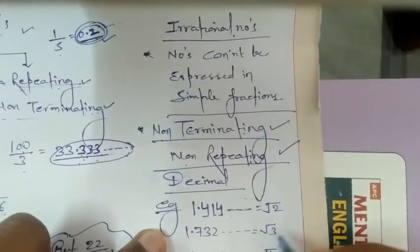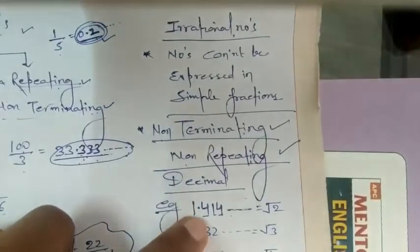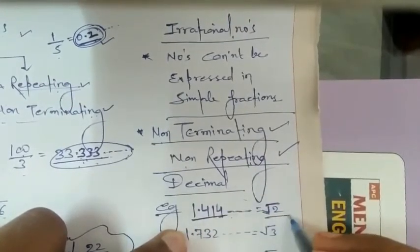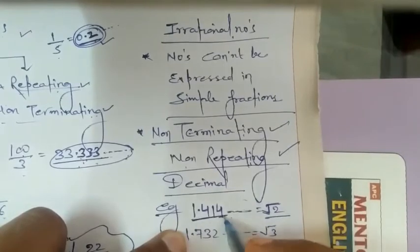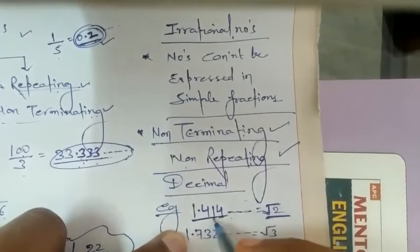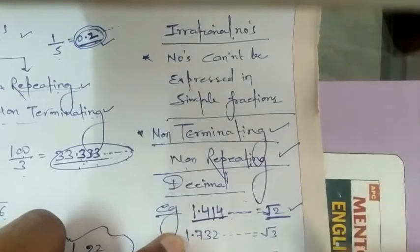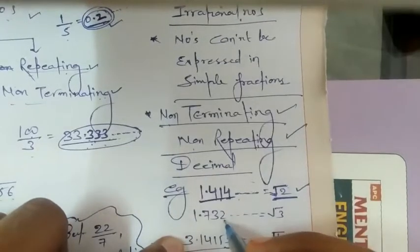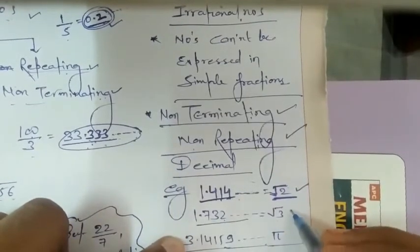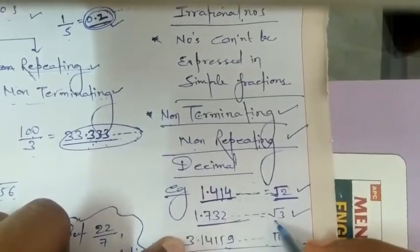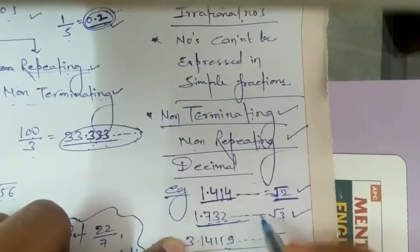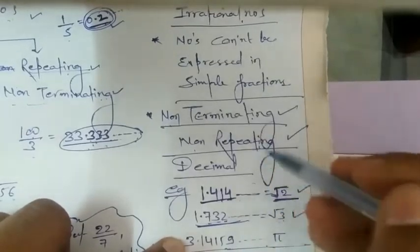Remember that the value of under root 2 is 1.414... — that is the value of under root 2. Since it is irrational, under root 2 is also an irrational number. 1.732 is the value of root 3. This is also irrational because after the decimal, no digit is repeating and it is non-terminating. So root 3 is an irrational number.